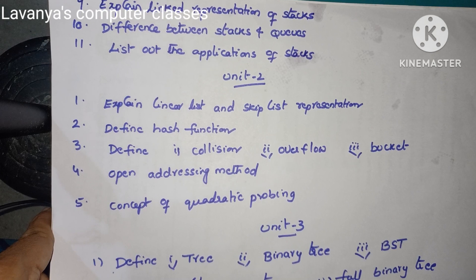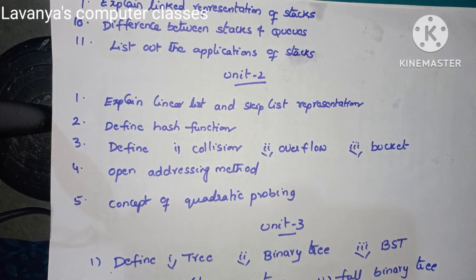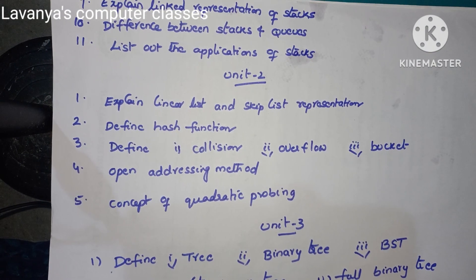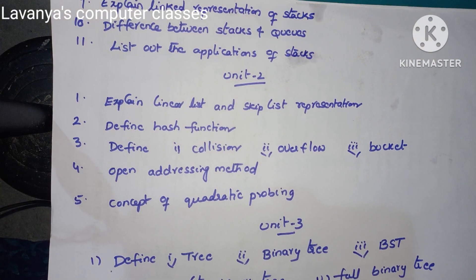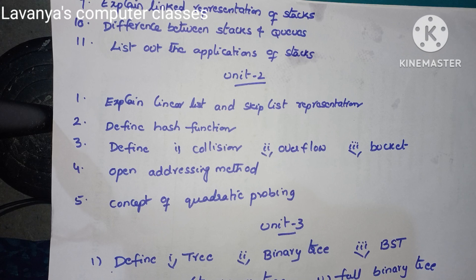That is a very important question. Unit 2 questions are: explain linear list and skip list representations; define hash functions and define the following terms — hash function, collision, overflow, and bucket.